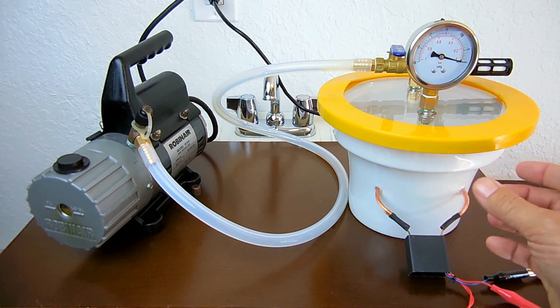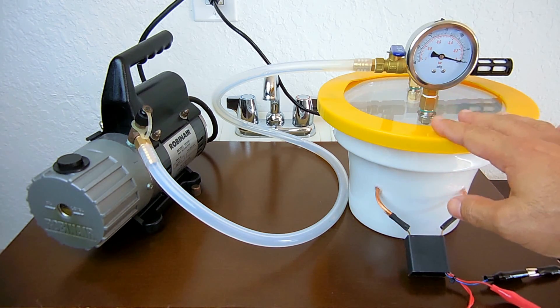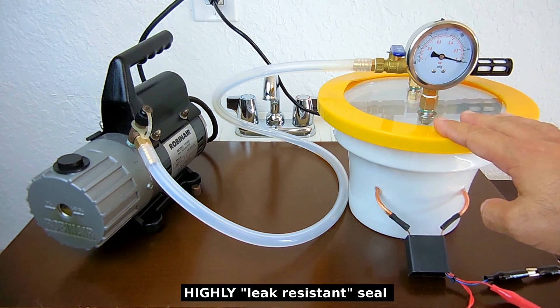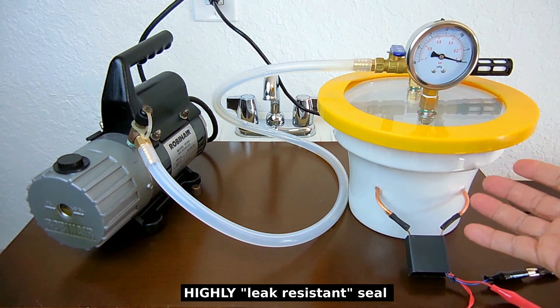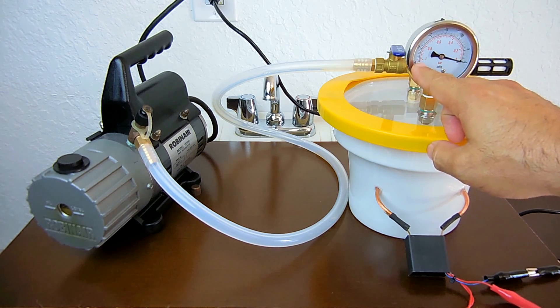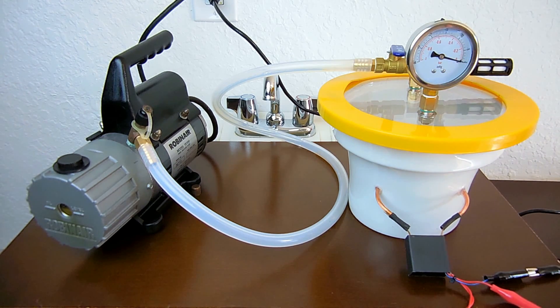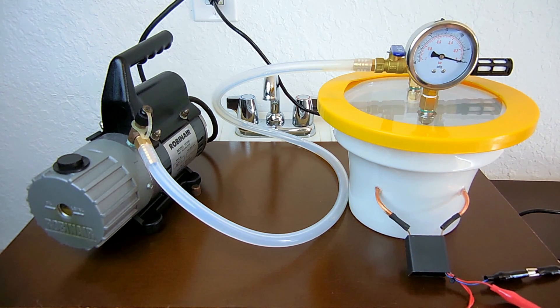The pot had to provide a positive seal on the vacuum chamber and be strong enough so I wouldn't have the risk of an implosion when this is all the way down to minus 30 inches of mercury. I also wanted to be able to drill two holes into the pot to insert the high voltage wires.